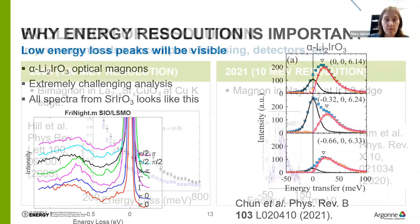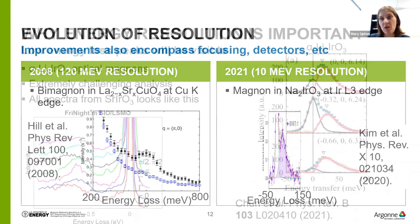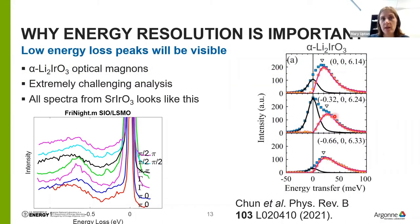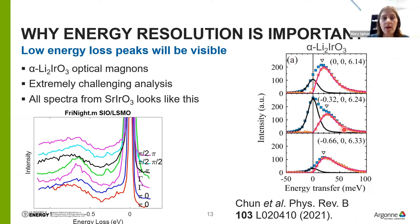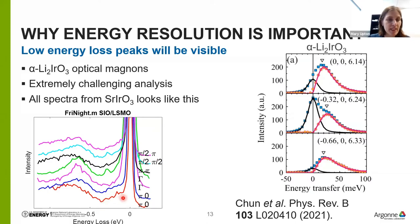One advantage of much better resolution is that it makes it possible to measure much lower energy features. Even now when we routinely run at about 35 meV, we run into this issue. In one iridate example, careful fitting was needed to extract a magnon dispersion — it would be far nicer if the elastic line were sharper. I also have unpublished strontium iridate 113 data with a magnon visible but basically a shoulder on the elastic line — I've never been able to make a convincing fit given the size of the elastic line. A much sharper energy resolution would make this peak much clearer.